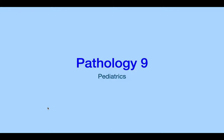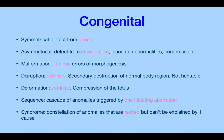Welcome back to pathology. Let's go through pediatric diseases. Symmetrical defects come from genes; asymmetrical defects come from the environment, such as placental abnormalities and decreased amniotic fluid, which result in physical or mechanical compression. Malformations are intrinsic errors of morphogenesis from genes — symmetrical defects. Disruption is an extrinsic occurrence: secondary destruction of a normal body region, not heritable, due to environmental factors.